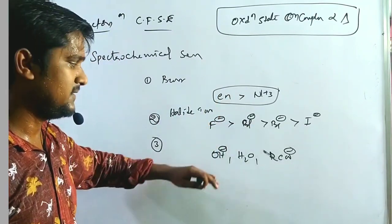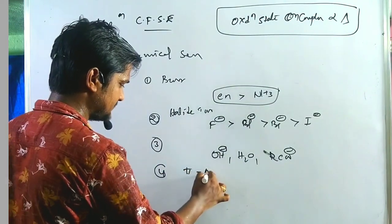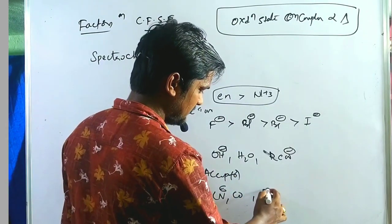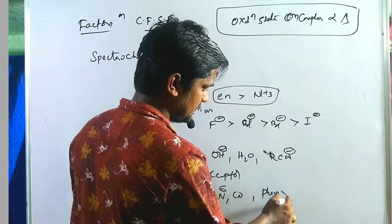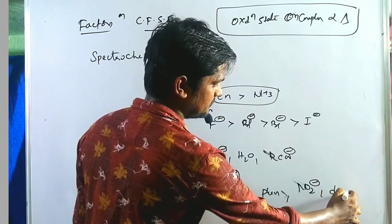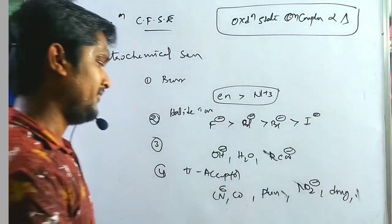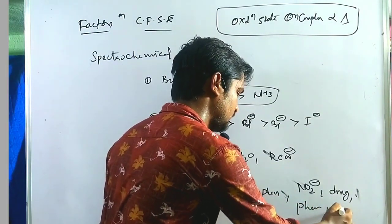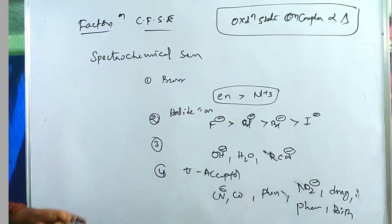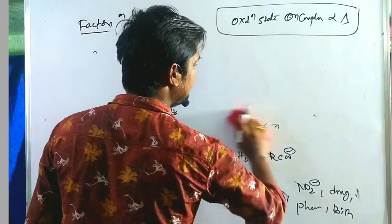Pi acceptor ligands include CO, 1,10-phenanthroline, NCS⁻, O₂²⁻, DMG, EDTA, ethylenediamine, bipyridine. All these are strong field ligands with large crystal field splitting. Using these factors, we arrange the spectrochemical series in the well-known manner.